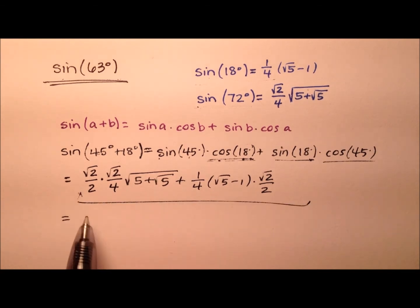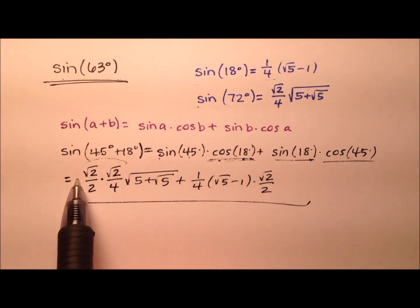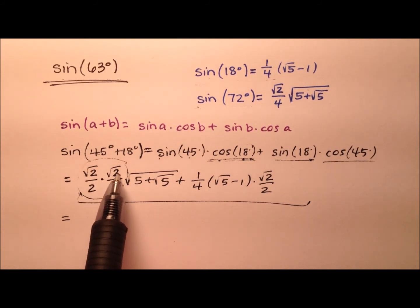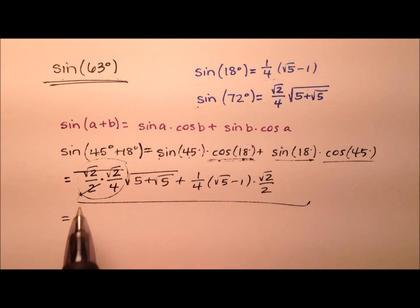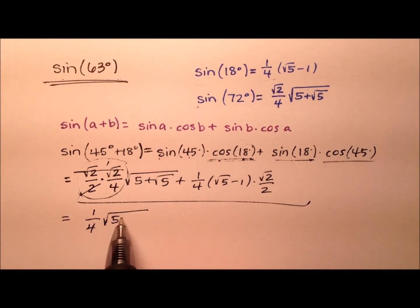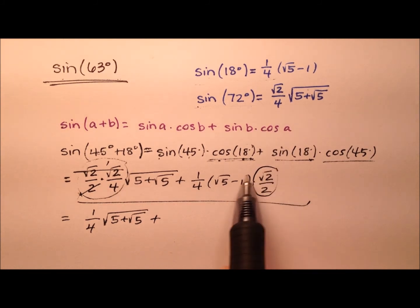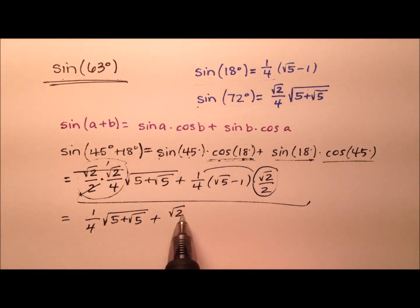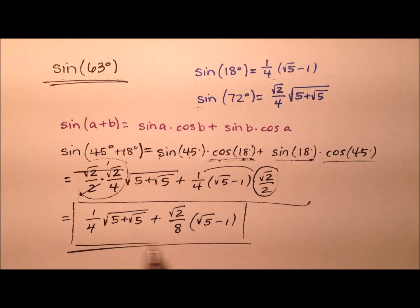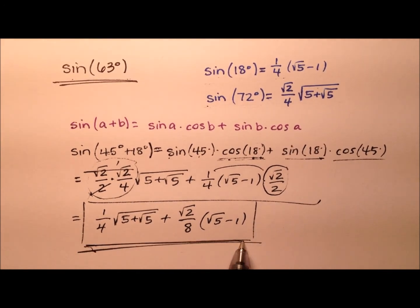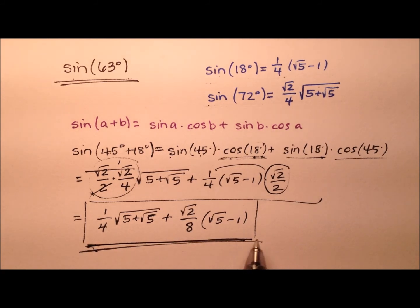At this point we just clean this up. The square root of 2 times the square root of 2 makes 2, which cancels with the other 2, so we have one-fourth times that square root expression. To that we add the square root of 2 over 2 multiplied by one-fourth, giving us the square root of 2 over 8 multiplied by the expression the square root of 5 minus 1. This expression is irrational with no decimals — we're not estimating or rounding. This is the exact value for the sine of 63 degrees.